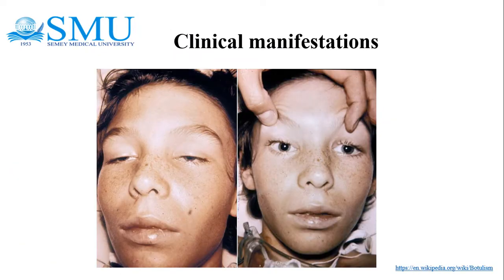Clinical manifestations of botulism are due to decreased acetylcholine at cranial nerve and parasympathetic nerve terminals. Common symptoms include diplopia, dysphagia, and dysarthria, descending symmetric flaccid paralysis of voluntary muscles, decreased deep tendon reflexes, and constipation. There are no sensory or cognitive deficits. Respiratory muscle paralysis may lead to death.